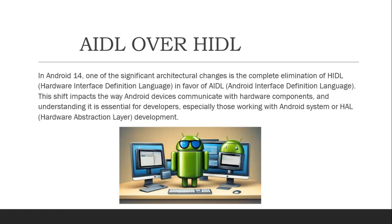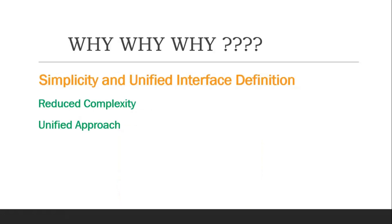Until Android 14, it was optional — there was an option of using AIDL over HIDL, and I have done a few videos on my channel covering what AIDL is and the different steps to build with it. But from Android 14, it's definitely mandatory. Google has made AIDL mandatory and eliminated HIDL entirely. We'll be seeing six reasons Google has provided for why this shift from HIDL to AIDL was made.